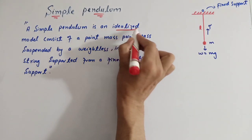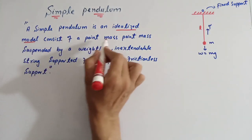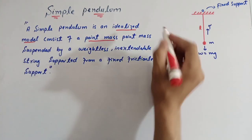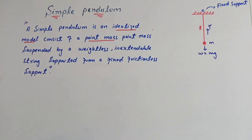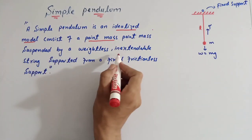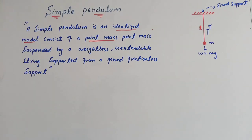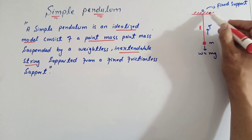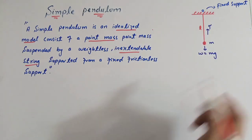یہ ایک idealized model ہے — ایک خیالی model — کیوں؟ Because it consists of a point mass (point-like mass), suspended by a weightless, inextensible string. String سے مراد رسی یا wire ہے۔ Inextensible مطلب جس کو وساط نہ دی جا سکے۔ یہ ایک fixed, frictionless support سے support ہوتا ہے۔